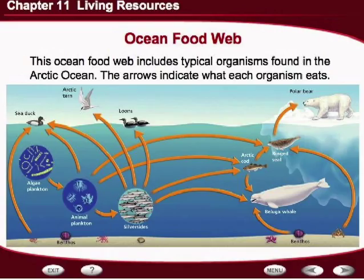If you said it's the algae plankton, you would be correct. The algae plankton has chlorophyll, which makes it green. Through photosynthesis, it absorbs heat from the sun and creates simple sugars. Those simple sugars are eaten by the animal plankton, which, as you can see by the arrows, several other organisms eat. All of the organisms in this ecosystem are dependent upon the algae plankton to start and be the basis of this ocean food web.